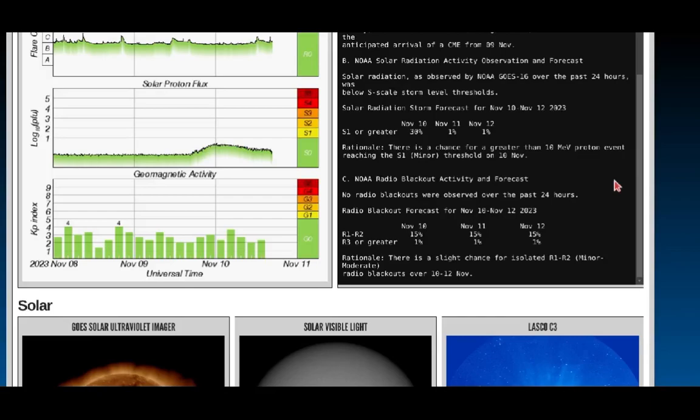As regards solar radiation, it is not much of a concern. Over the past 24 hours, well below S-scale storm thresholds, and there's about a 30% chance of an S1 in the next few days. That is a very minor solar condition, not of much concern.